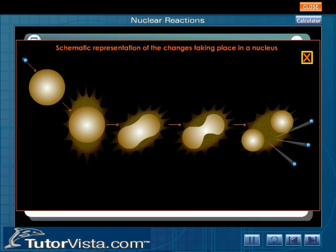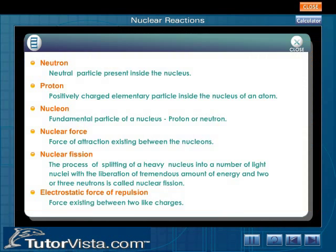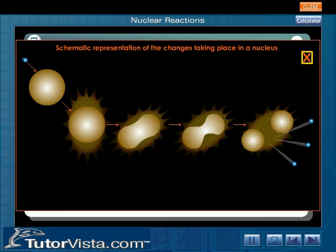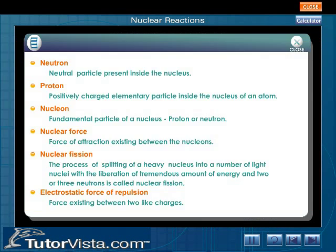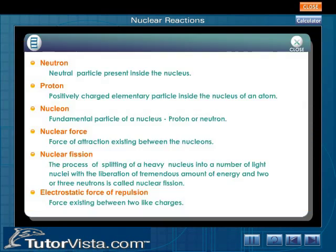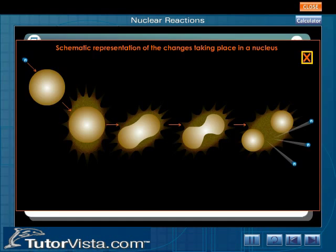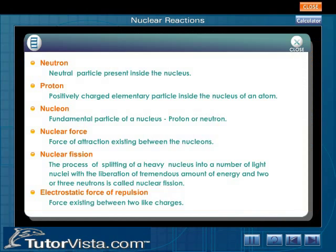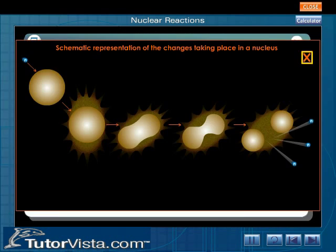According to Bohr's liquid drop model, a nucleus is always spherical in shape. A nucleus contains positively charged protons and neutrons which are neutral. In the stable state, the repulsive force between the protons tries to pull the nucleus apart. This repulsive force is balanced by a strong nuclear force of attraction between the nucleons.